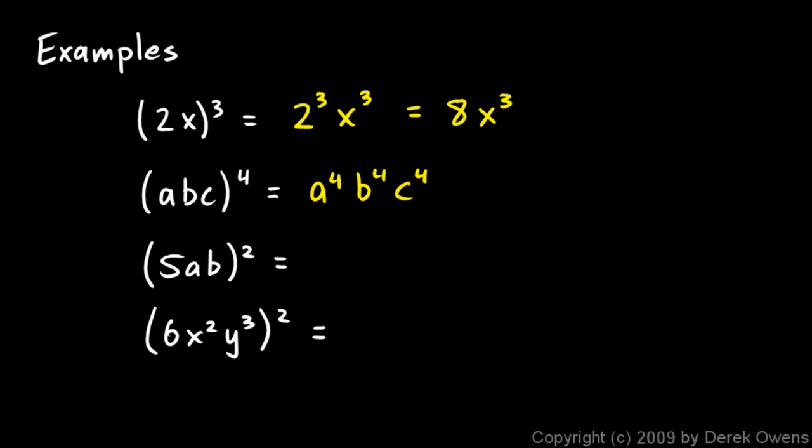And in this one, we have 5ab squared. So the answer will be 5 squared times a squared times b squared. And again, we know that 5 squared is 25, so we can take this one step further and say this is 25a squared b squared.